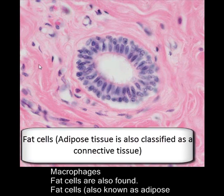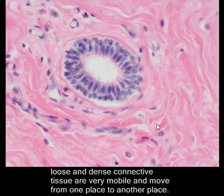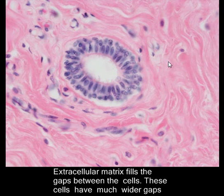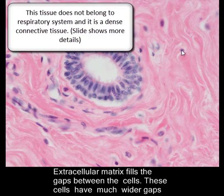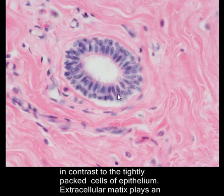Unlike epithelia, most cells of the loose and dense connective tissue are very mobile and move from one place to another easily. Extracellular matrix fills the gaps between the cells. These bluish-looking structures are nuclei of cells, and everything between cells is known as extracellular matrix. These cells have much wider gaps in contrast to the tightly packed cells of the epithelium.